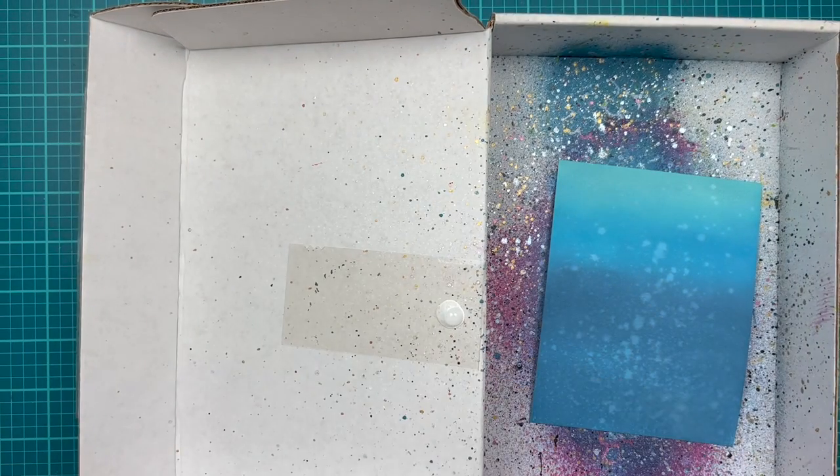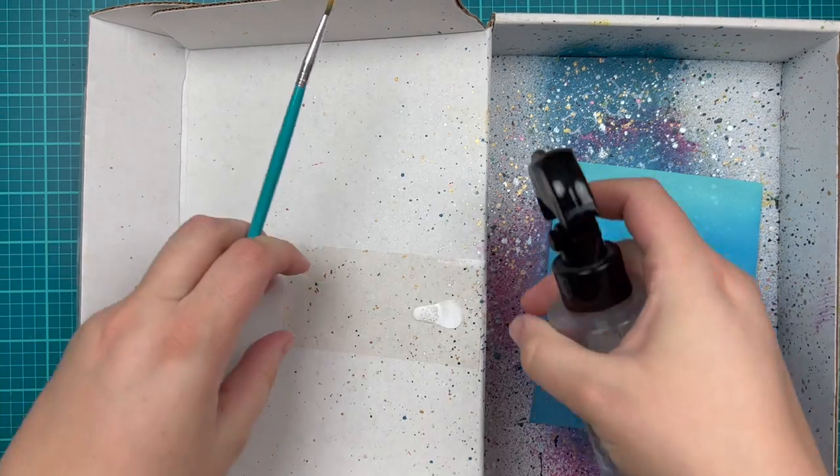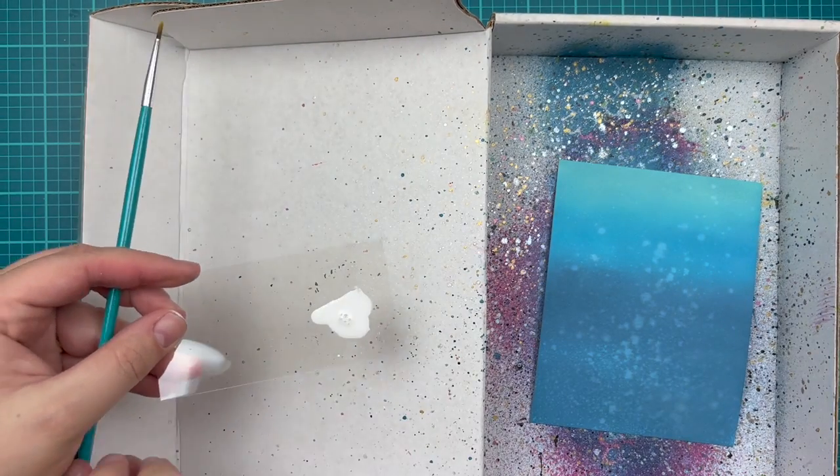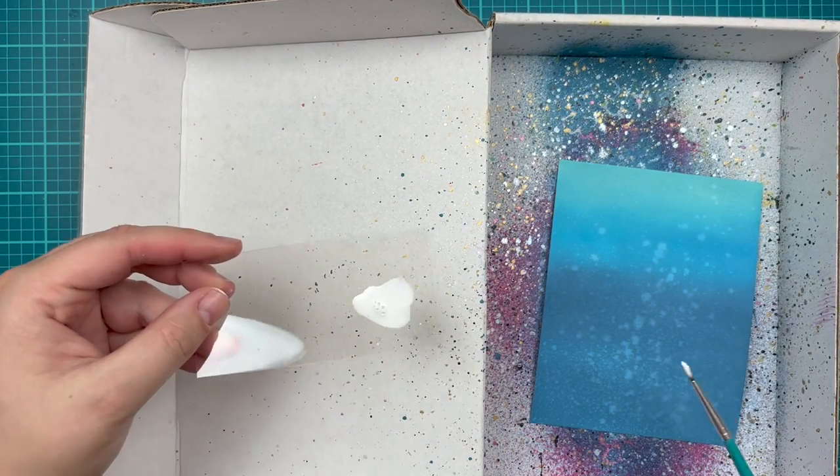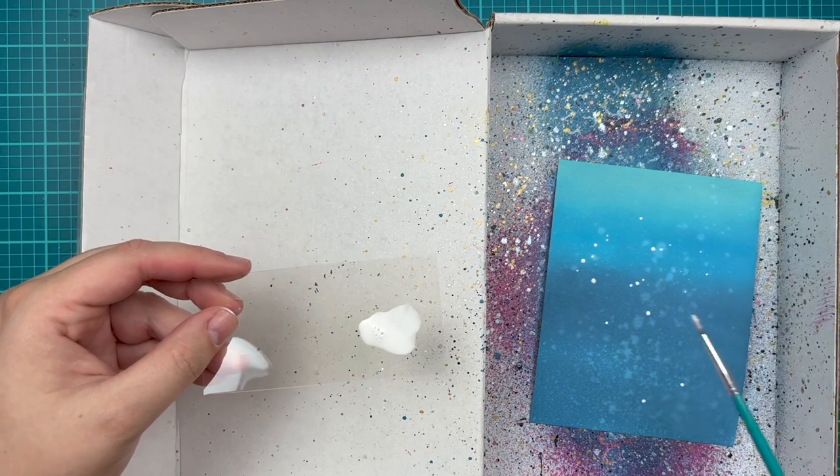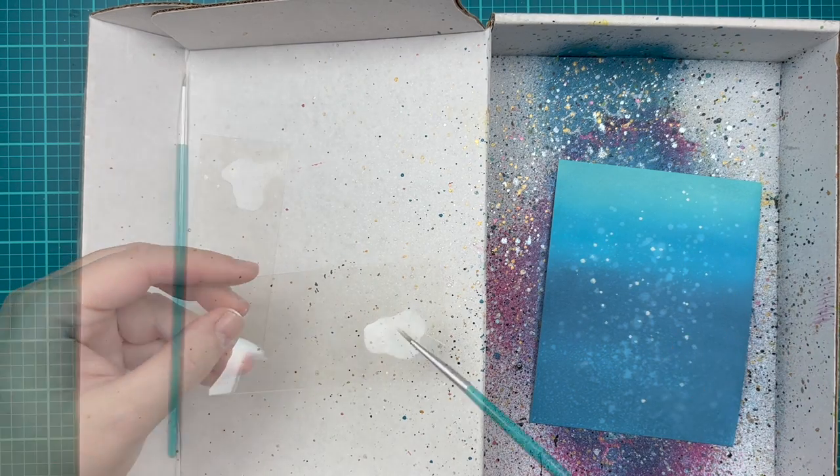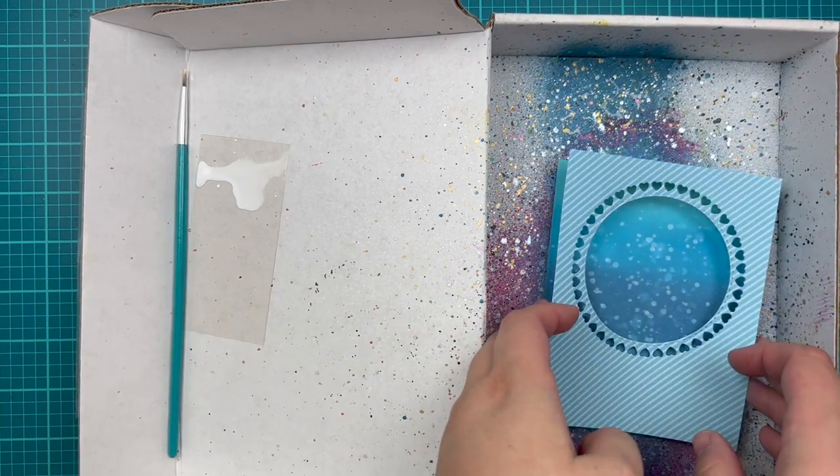And then of course I like to add some splatter. So I'm grabbing some of my white ink. I will spray that with water as well. And I have a very fine paintbrush to add that splatter to the background. Once I'm happy with how much splatter I have, I'm just going to make sure it looks good behind my frame. And now we can start building our shaker.